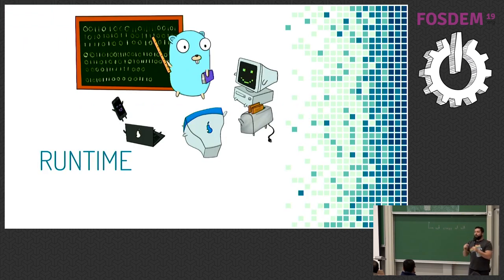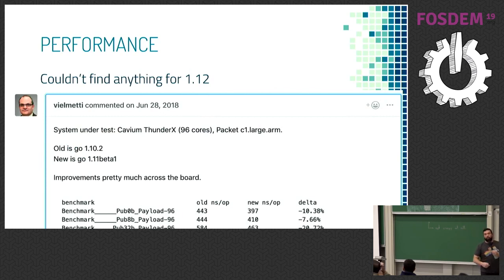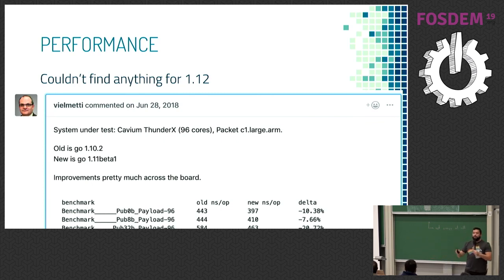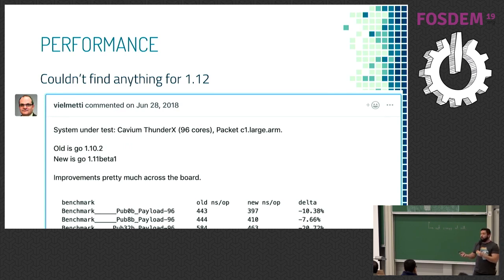Changes in the runtime performance: not much official data. Everything is a little bit faster but there's no official benchmark yet. From one large library's benchmark, everything was a little bit faster from 1.11 beta 2 onward. Go 1.12 is supposed to be a little bit faster too.